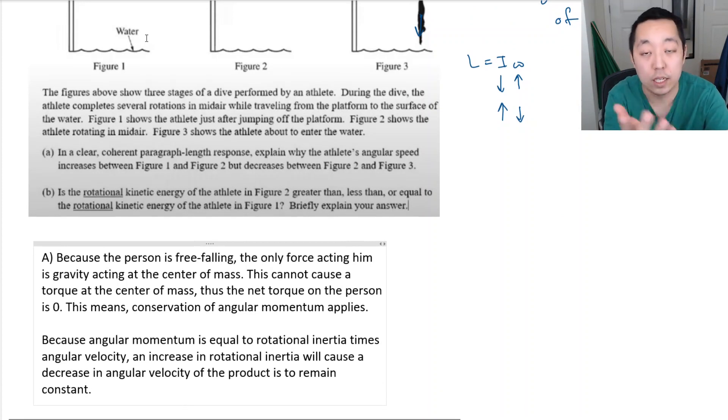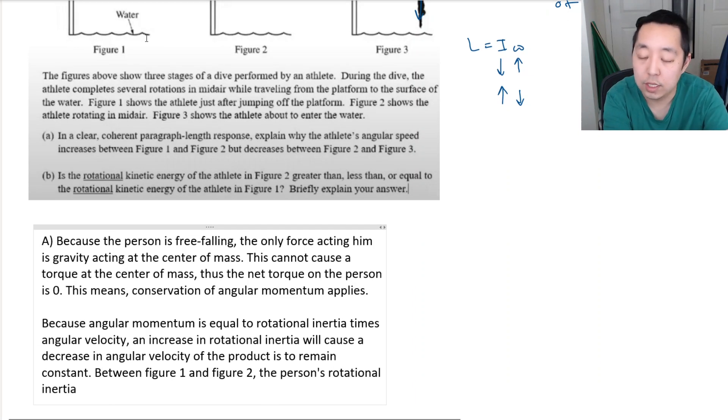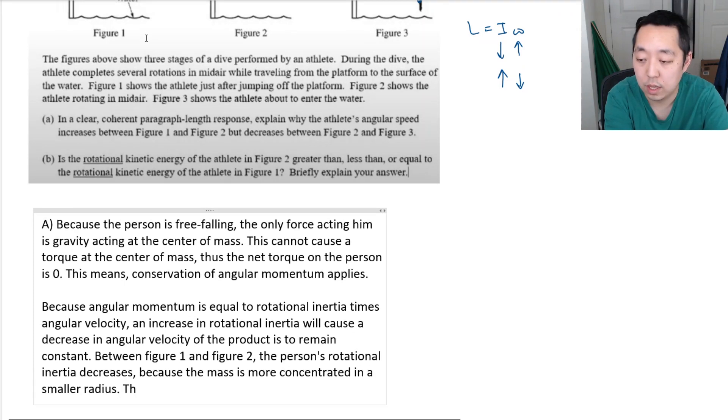An increase in rotational inertia will cause a decrease in angular velocity if the product is to remain constant. That is what conservation of angular velocity is. Between figure 1 and figure 2, the person's rotational inertia decreases because the mass is more concentrated in a smaller radius. Thus, the angular velocity increases.